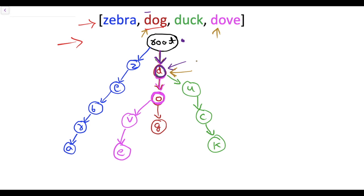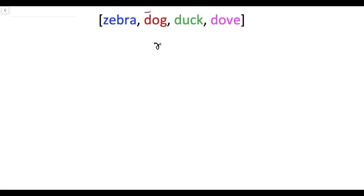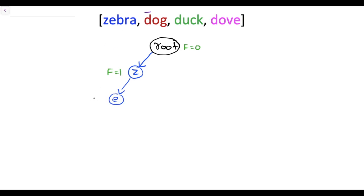So let's rebuild the trie with prefix frequencies. We start with the root, which has frequency 0. Now we add 'zebra': starting from root there is no edge to Z, so we create Z with frequency 1. We add E with frequency 1 — the prefix ZE has frequency 1. We add B, also with frequency 1.